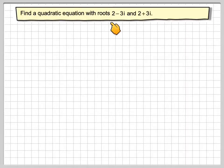Find the quadratic equation with roots 2 minus 3i and 2 plus 3i. Notice that the roots are conjugate pairs.